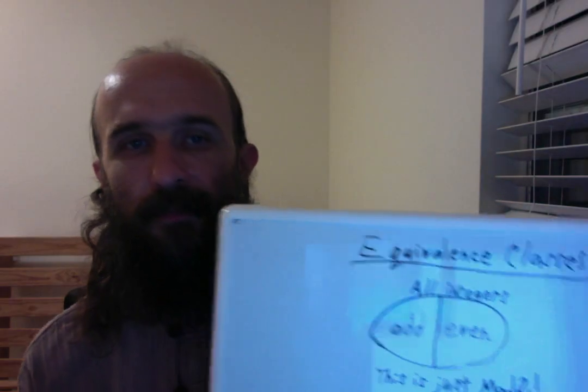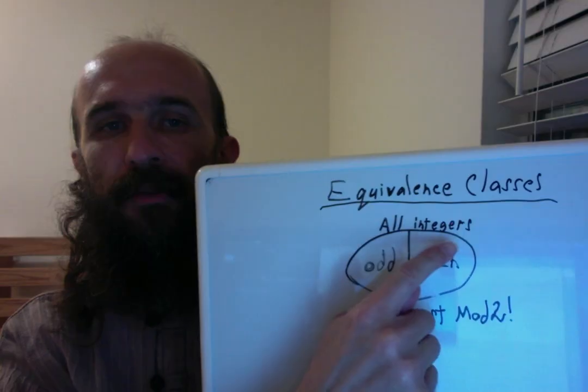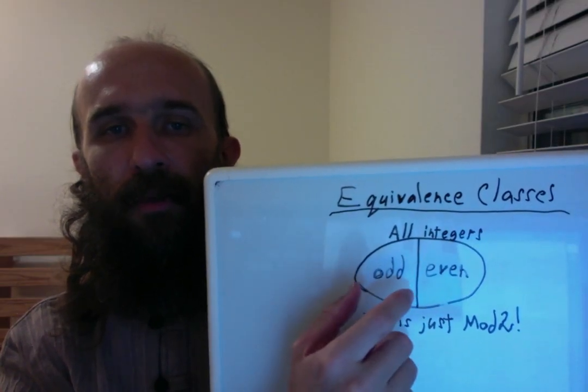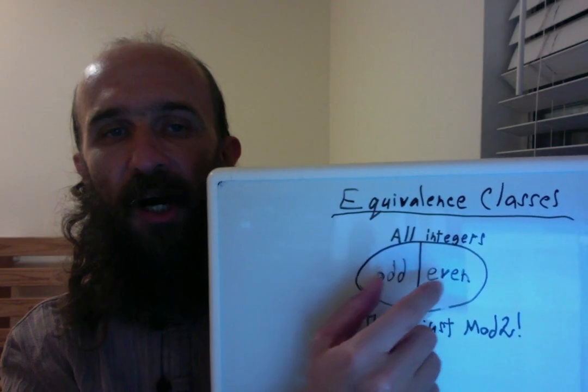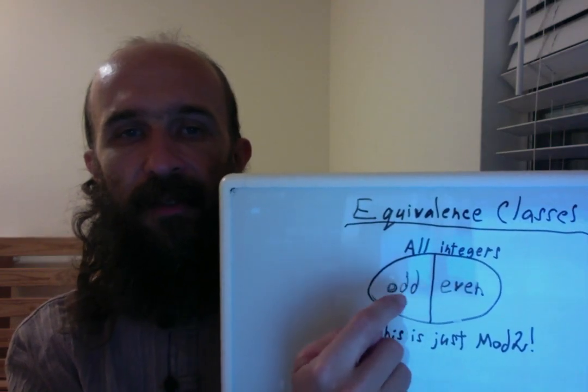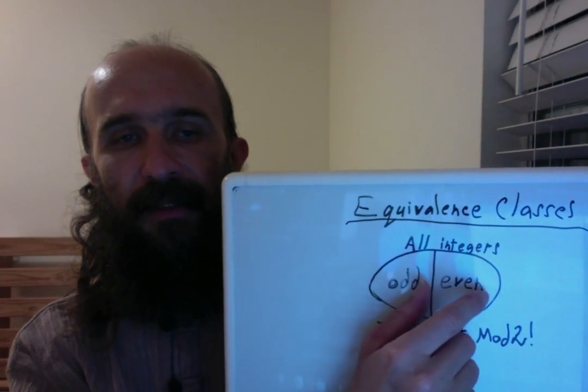In the last one, we went over modular arithmetic. Now let's talk about how a modulus defines equivalence classes. So if we look at all integers, we can divide the integers into two what are called equivalence classes, odd and even. So every integer is either odd or even, and not both. So these are called equivalence classes.